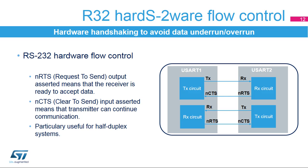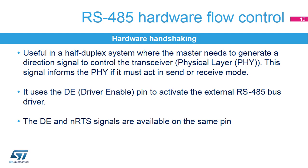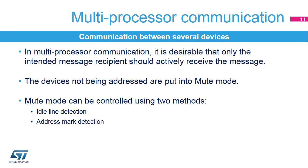Both signals are active low. For serial half-duplex communication protocols like RS-485, the master needs to generate a direction signal to control the transceiver or physical layer. This signal informs the physical layer if it must act in send or receive mode. In RS-485 mode, a control line is used. The driver-enable pin is used to activate the external transceiver control. DE shares the pin with NRTS.